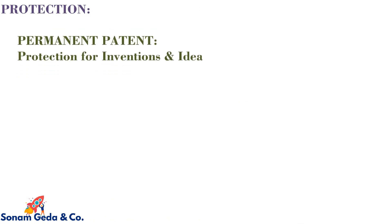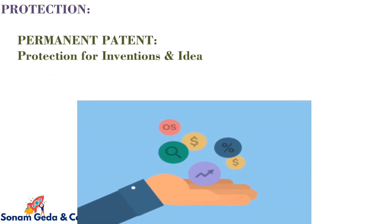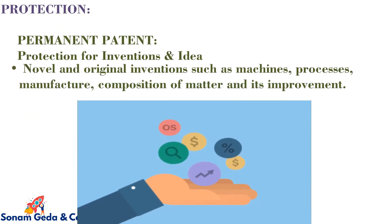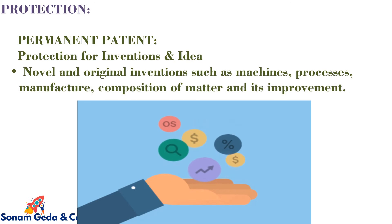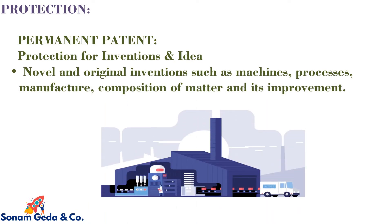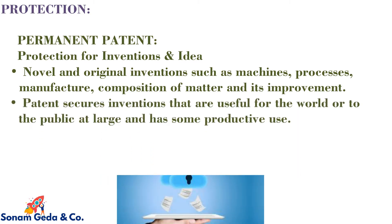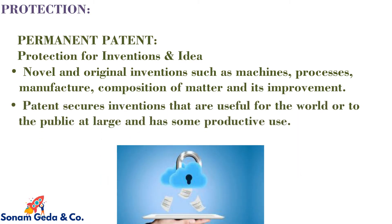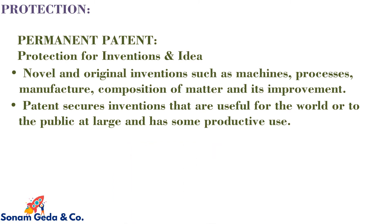In case of permanent patent, there is protection for invention and idea — novel and original inventions such as machines, processes, manufacture, composition of matter and its improvement. Patent secures inventions that are useful for the world or to the public at large and have some productive use.